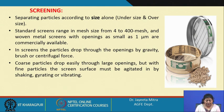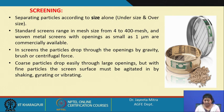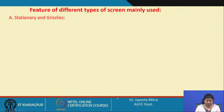In screens, the particles drop through the openings by gravity, brush, or centrifugal force. Coarse particles drop easily through large openings, but with fine particles the screen surface must be agitated by shaking, gyratory, or vibrating motion — otherwise those fine particles may clog the pores of the screens. To get a particular size fraction, a screen gives us two fractions: one retained over the screen and the other passing through.